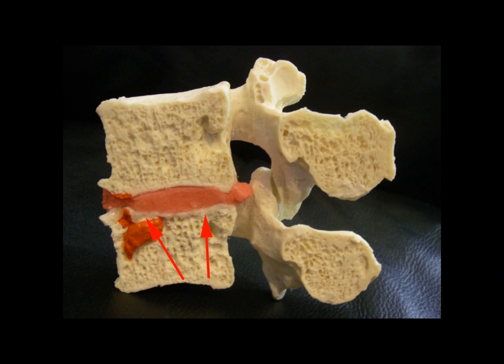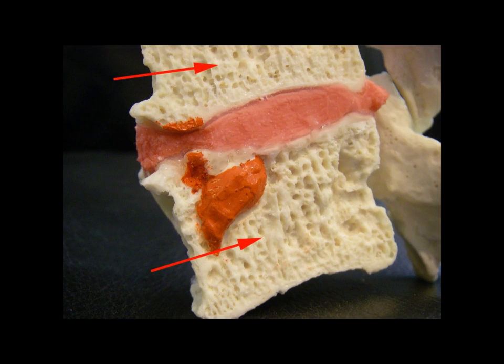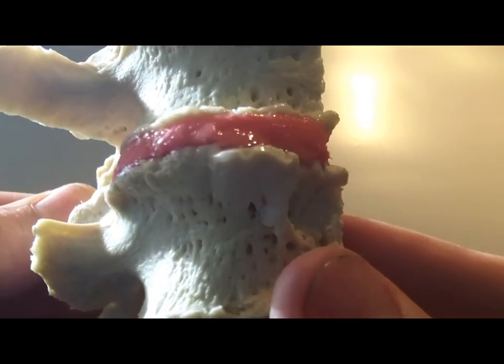Features include end plate thickening, cortical thickening, a homogeneous disc with a herniated nucleus, and a woven bone pattern.